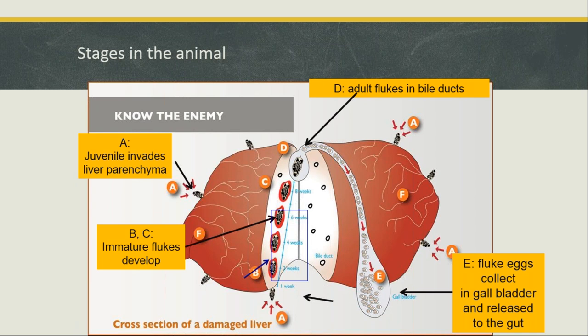It takes about eight weeks for the fluke to reach the bile ducts. For those first two to four weeks they're migrating through and chopping through the liver before entering the bile ducts. By about 12 weeks they're full-grown adult parasites. They start shedding eggs, and liver fluke are hermaphrodites — every fluke lays eggs and they can self-fertilize or mate. One parasite can lay 50,000 eggs a day.